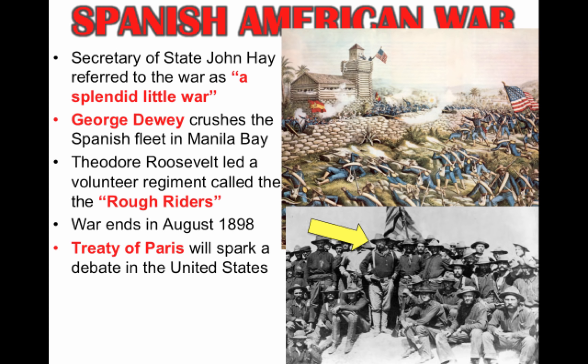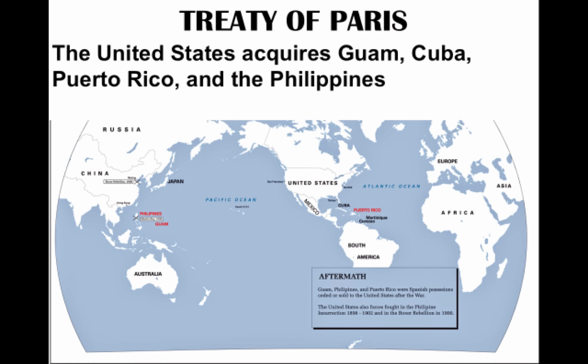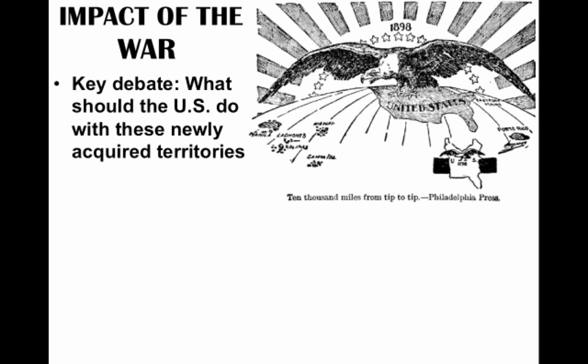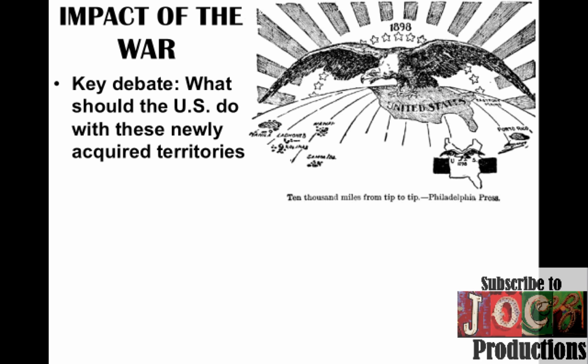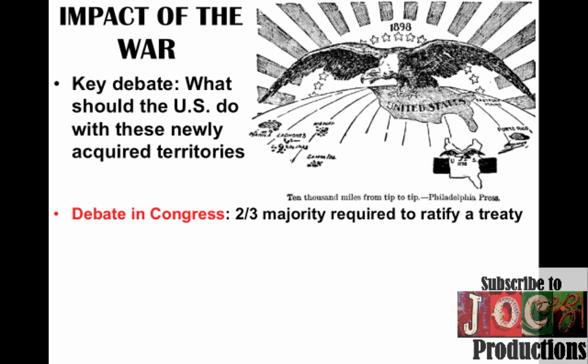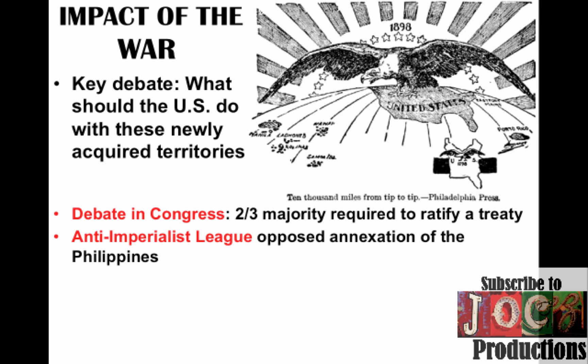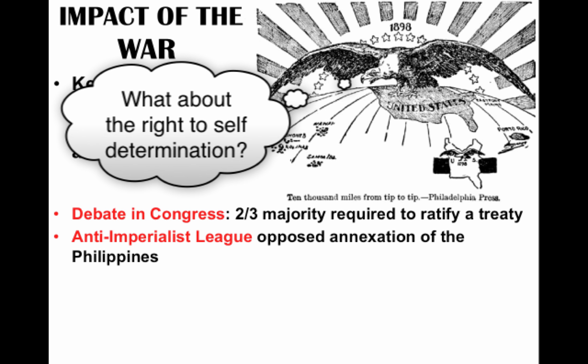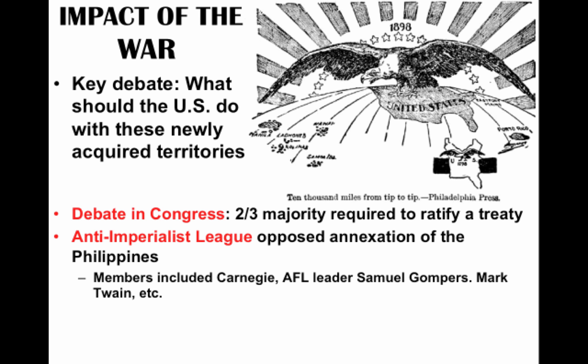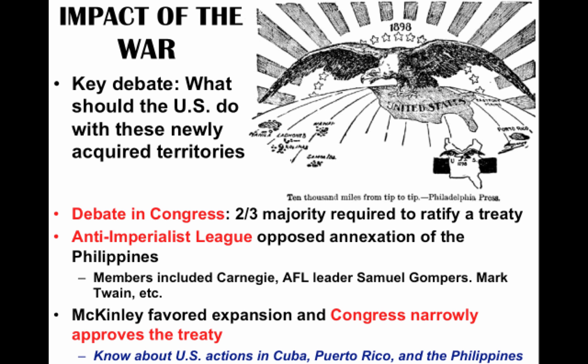The Treaty of Paris sparked a huge debate in the United States. It gave the U.S. Guam, Cuba, Puerto Rico, and the Philippines — Spain was paid $20 million, and all four territories came under U.S. possession. The debate was: what should the U.S. do with these newly acquired territories? A two-thirds majority was required to ratify the treaty, and many opposed it. The Anti-Imperialist League — including Andrew Carnegie, Samuel Gompers, and Mark Twain — opposed annexation of the Philippines. However, President McKinley favored expansion, and Congress narrowly approved the treaty.